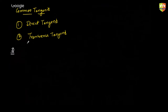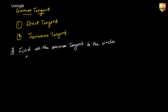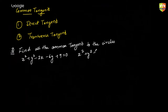The first question is: find all the common tangents to the circles x² + y² − 2x − 6y + 9 = 0 and x² + y² + 6x − 2y + 1 = 0. Remember, if these two circles are far apart from each other and don't touch, you will get four answers — two direct tangents and two transverse tangents.